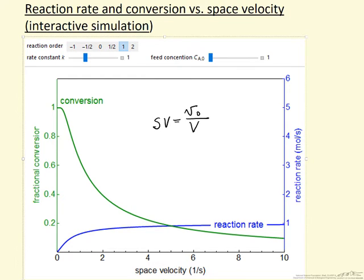But notice now these two things start to compensate. So the conversion is going down, the space velocity, the feed of reactants is increasing, so the reaction rate does not increase very much for first order reaction at these conditions.